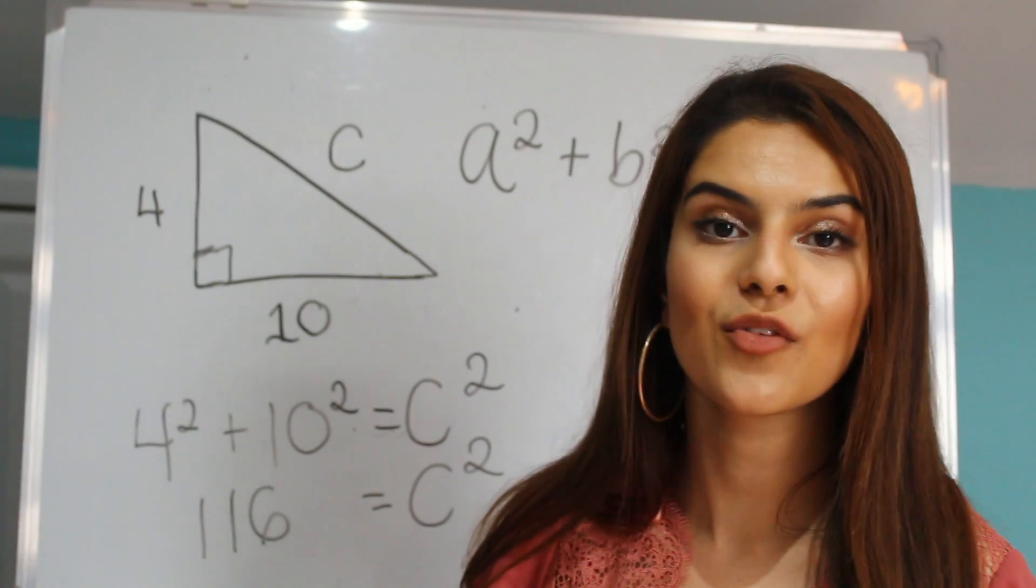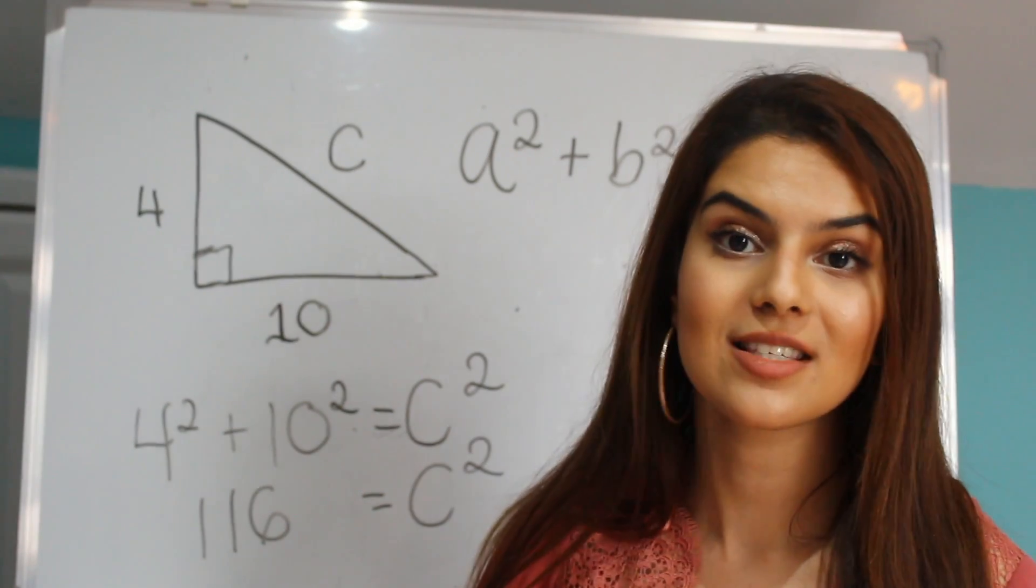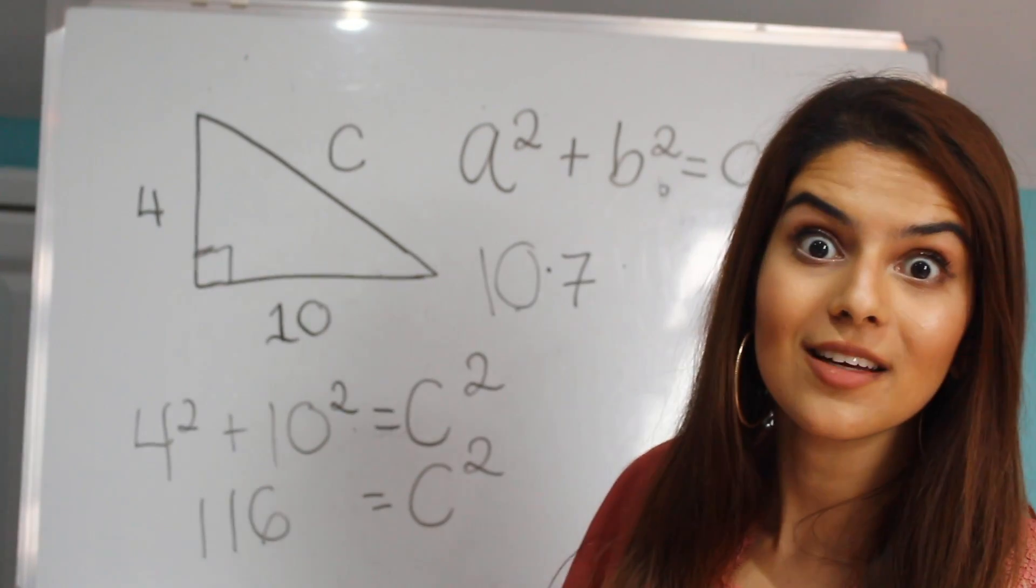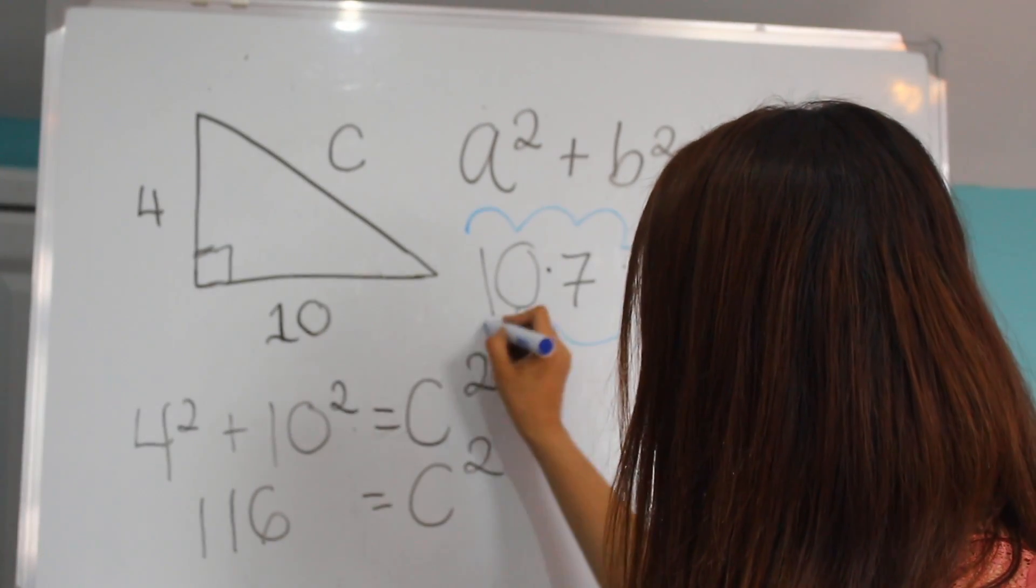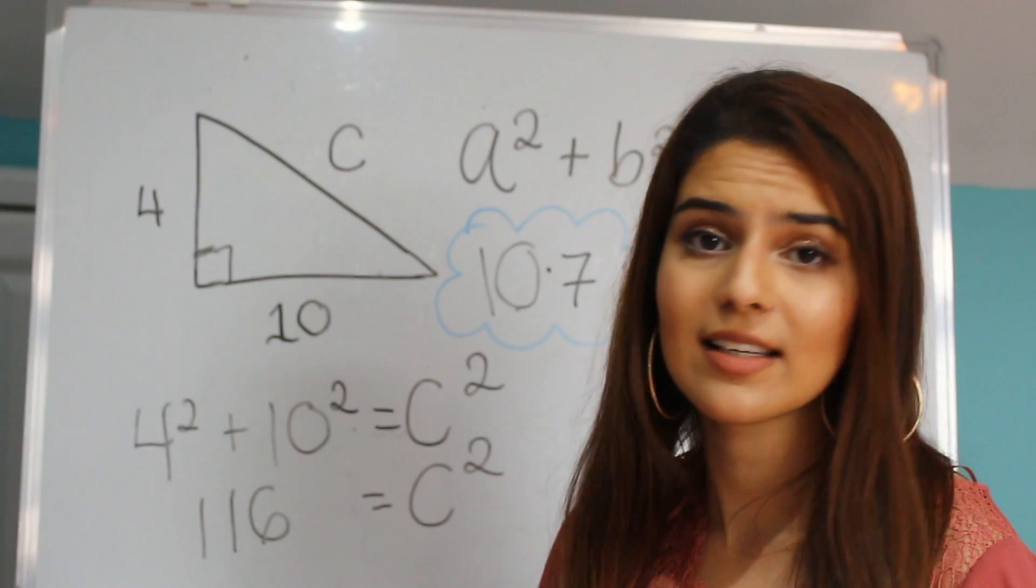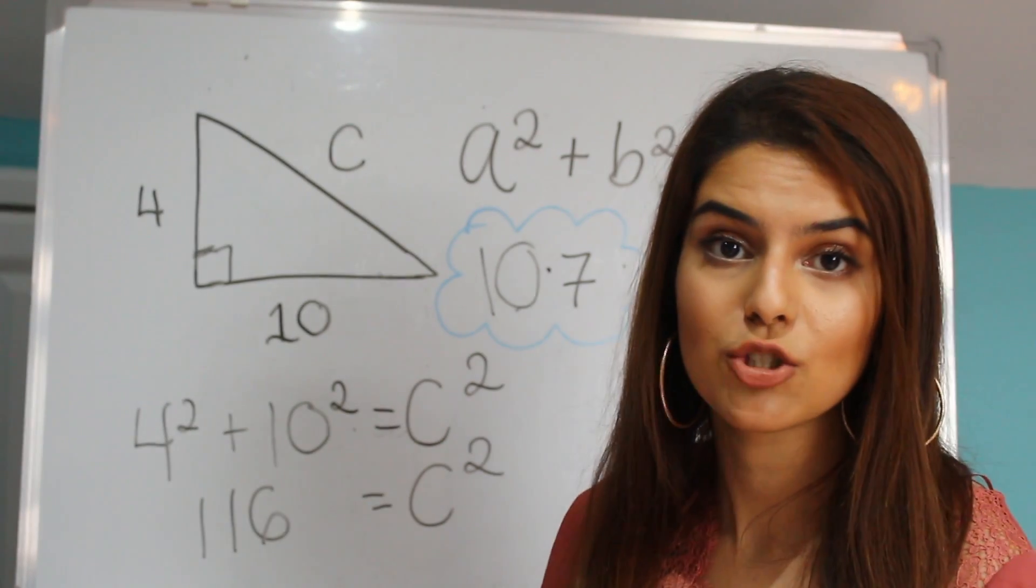So 116 square rooted would be 10.7. And that would be our final answer. And remember to write whatever units they give you for that question.